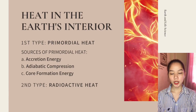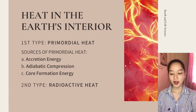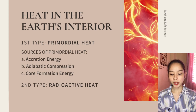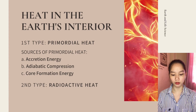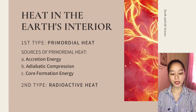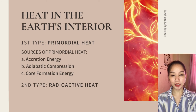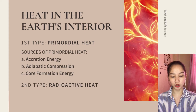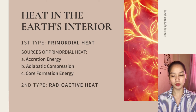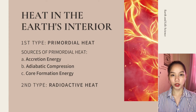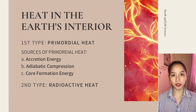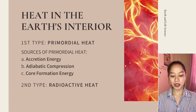The second endogenic process is the heat in the earth's interior. There are two types: primordial heat and radioactive heat. Primordial heat is generated during earth's formation. Its sources are accretion energy — the heat released from collision of planetary objects during early planet formation — adiabatic compression, which is heat generated as materials are compressed, and core formation energy, which is the heat from the earth's core.